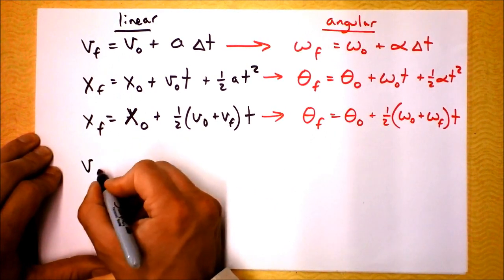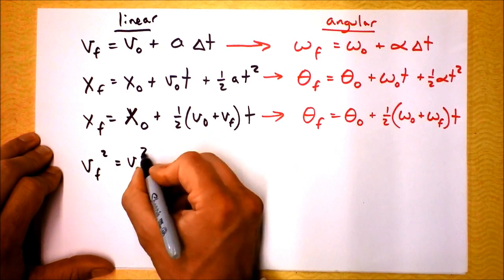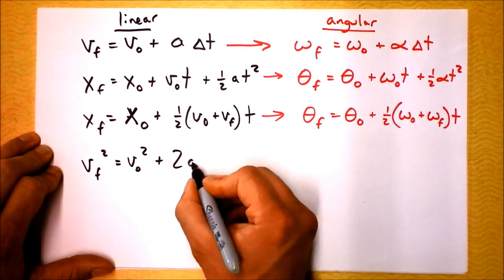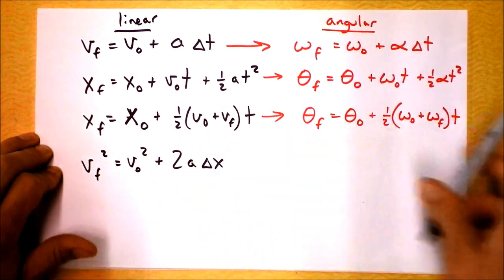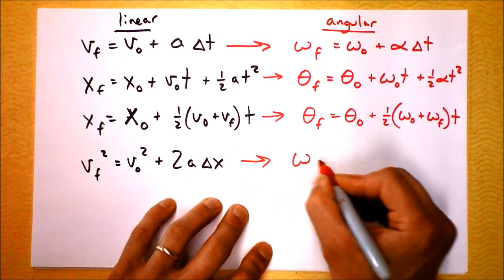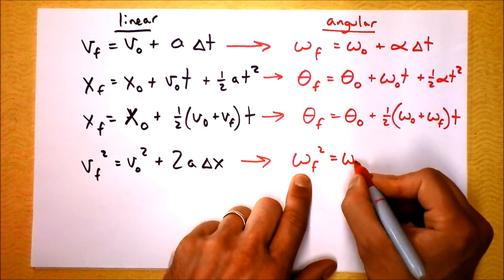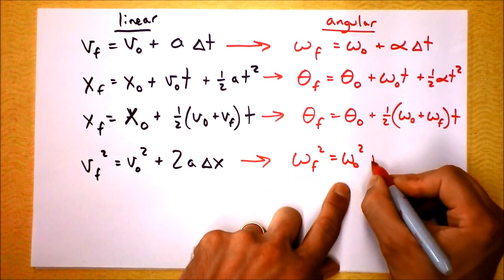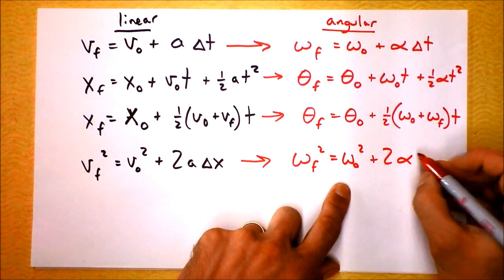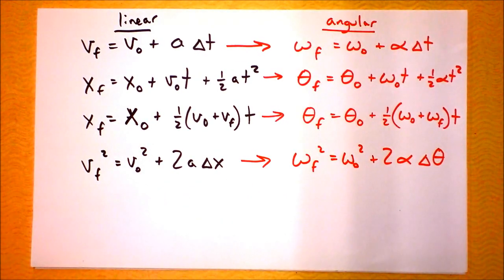Final velocity squared, tail of two squares, is initial velocity squared plus 2 times acceleration times change in position. Has another analog here. That is omega final. The final angular velocity squared is equal to the initial angular velocity squared plus 2 times angular acceleration times change in angle. Awesome.